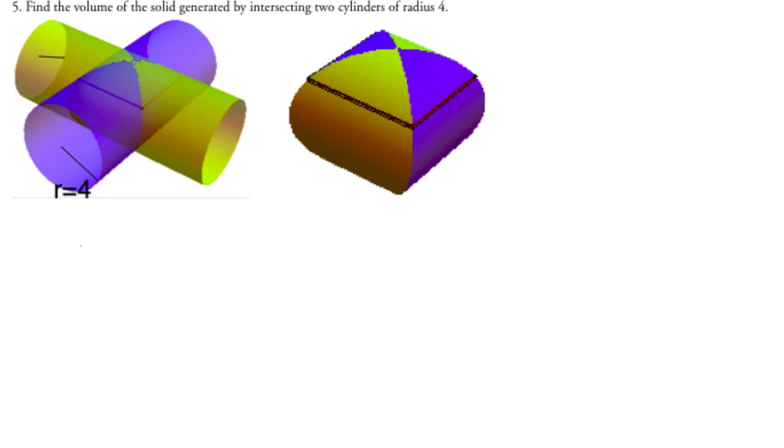So you'll notice this is what the intersection looks like, and notice that the cross-section is simply a square. Let's call the length of this square L, and so the area of the cross-section would equal the length squared.